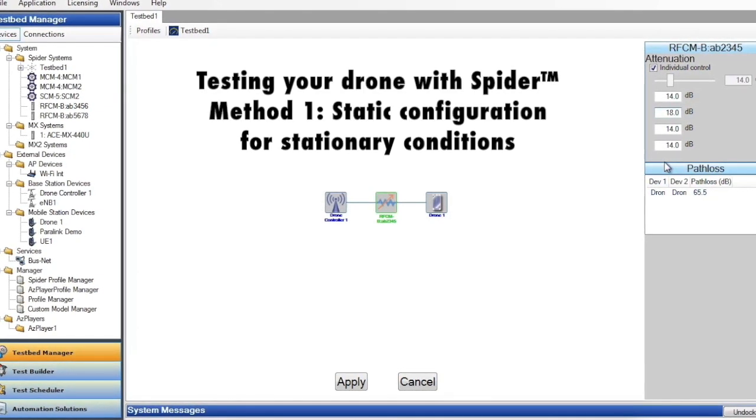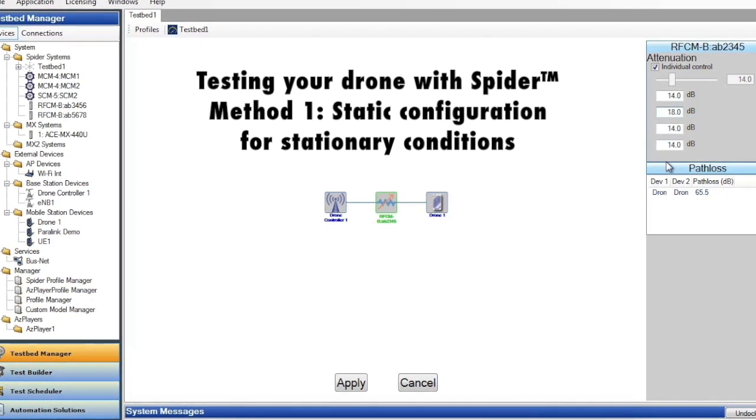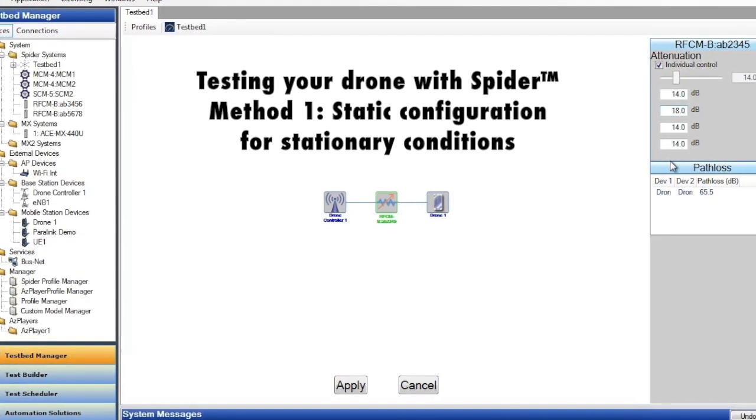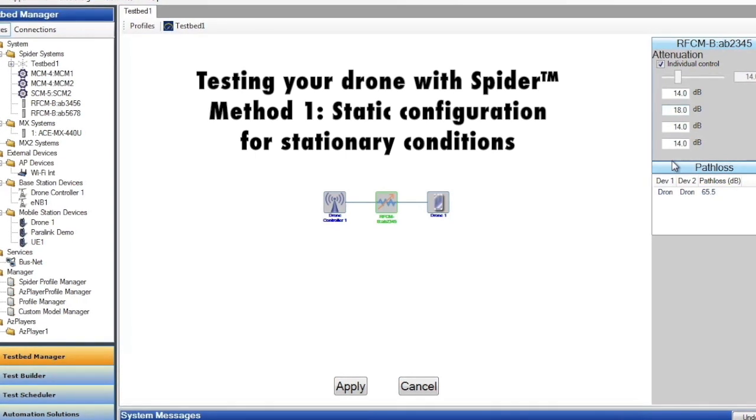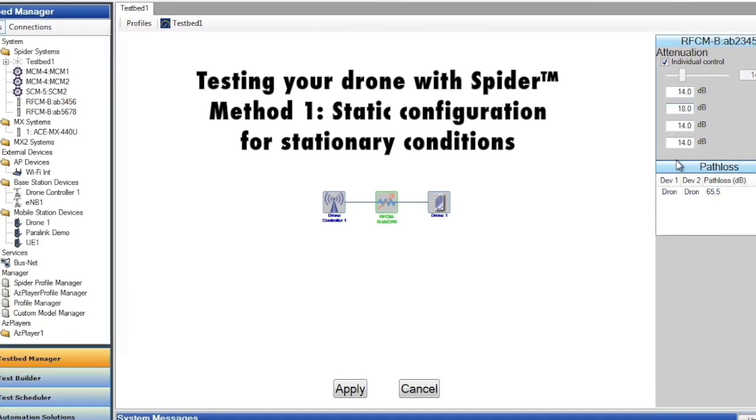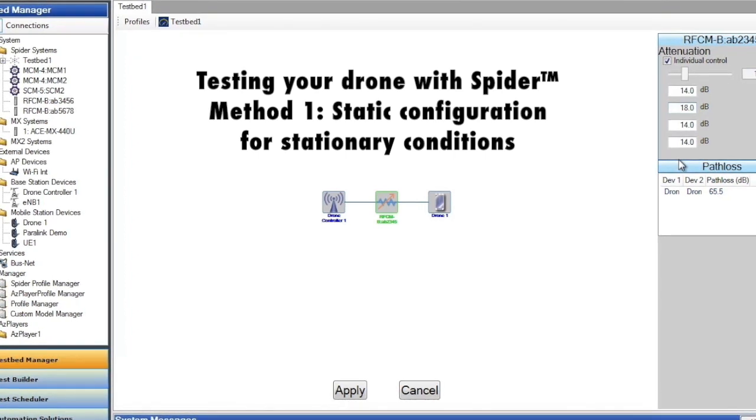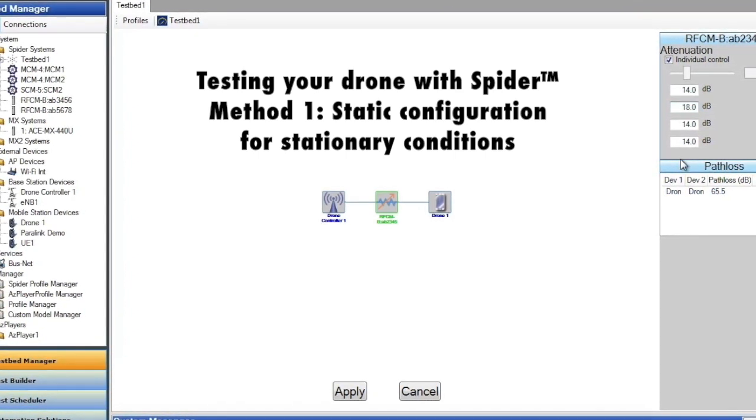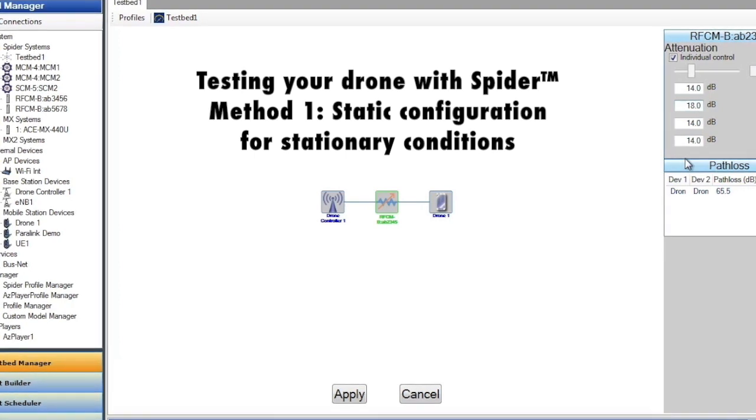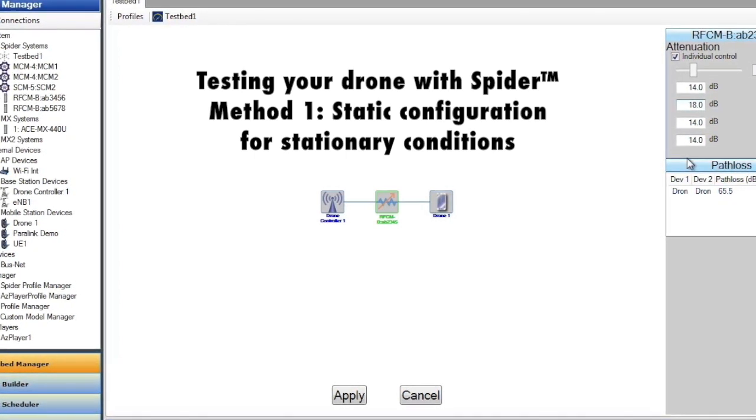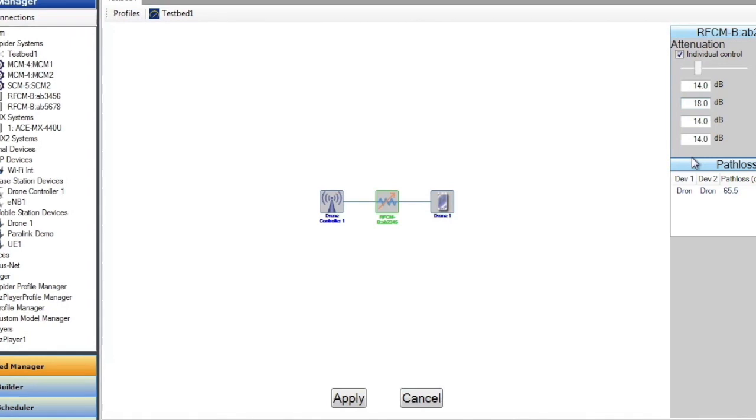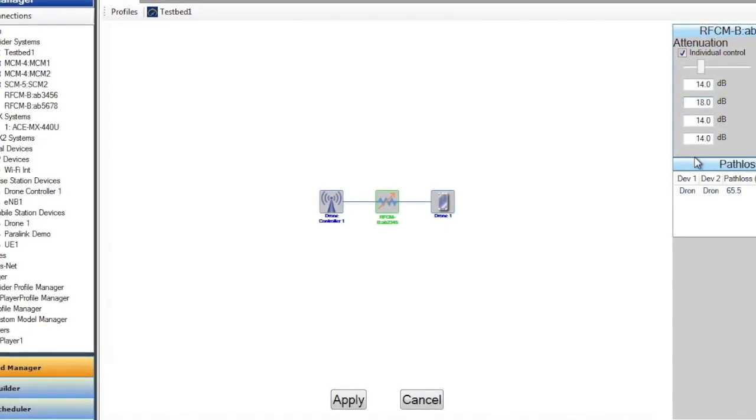I can test the drone two ways. One is I can configure the drone for a static configuration. In this case, I have a drone controller that talks to the drone through the RF channel module. Now I can set a static configuration where I might tell the drone controller is 15 dB away from my drone. So that's one way for me to do this testing. Now as you can see, the power of Spyder is I can tell if I want all the four or multiple antennas on the drone to see the same path loss or set the path loss individually. I might tell one antenna is shadowed by another antenna. So the path loss should be higher. So you have the ability to do that.